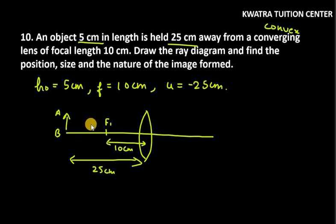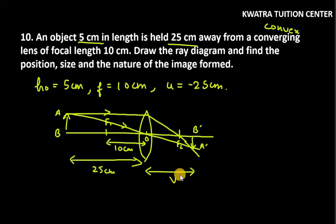The first ray is called parallel to principal axis. Where does it pass from F2? Where is the other ray? It passes from center O. You can see here that your image is on the other side. You can see that it is inverted. Here is O, center and parallel to principal axis.